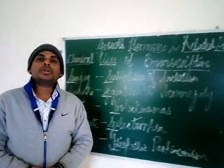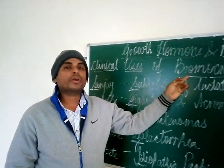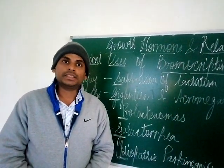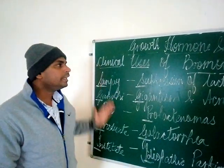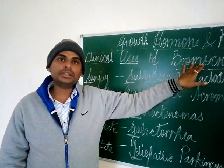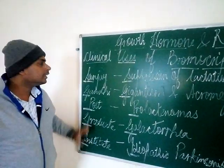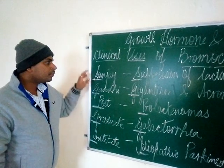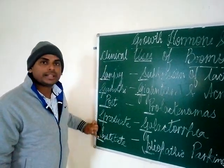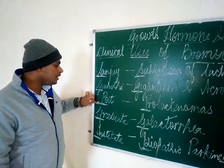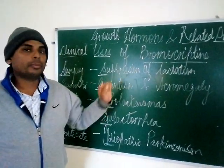Today I will be talking about one of the very famous endocrine growth hormone related drugs, which is bromocriptine and its clinical uses. I have made a mnemonic — a short trick — to easily remember the clinical uses of bromocriptine. The mnemonic is 'Sanjay Gandhi Postgraduate Institute,' where every initial letter — S-G-P-G-I — corresponds to one of the clinical uses of bromocriptine.